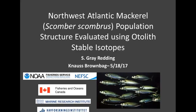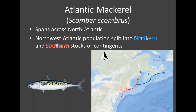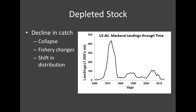Atlantic mackerel span the entire North Atlantic, with populations in the Northeast centered around Europe and a population in the Northwest spanning between the US and Canada. I'll be primarily talking about this Northwest Atlantic species today. This population is traditionally broken down into two separate contingents: a northern contingent around Canada and a southern one around the United States. These are both migratory, swimming north in the spring and returning south in the winter. The contingents are also managed separately between the two countries, but they do have some level of overlap in their migration.